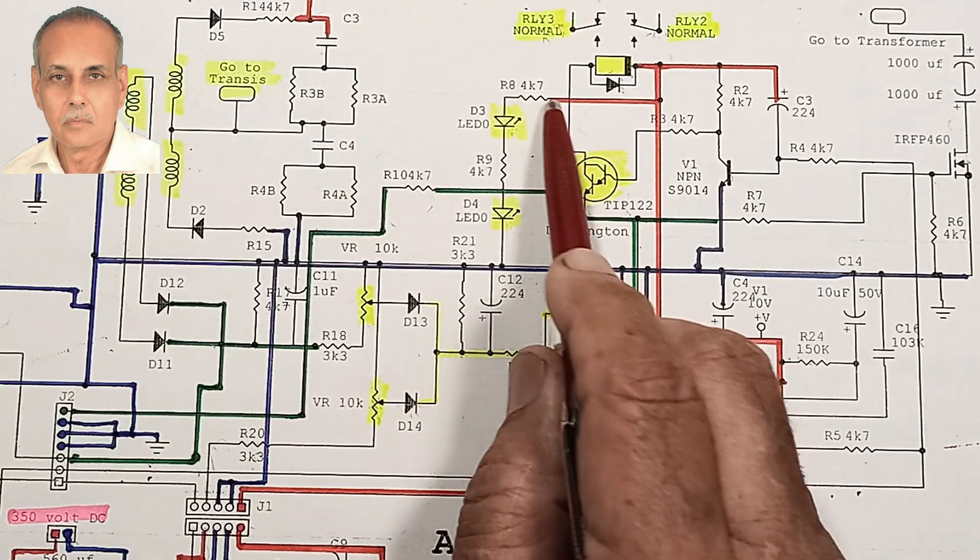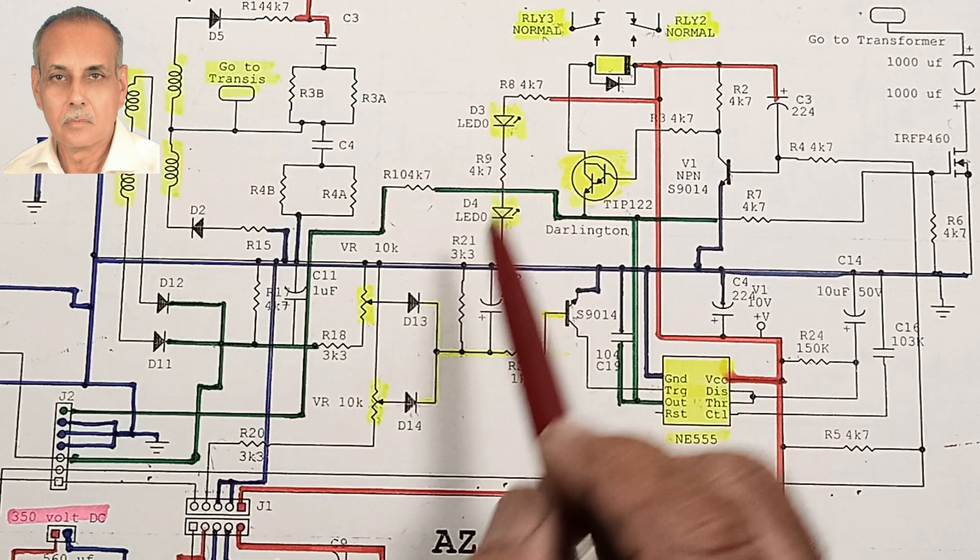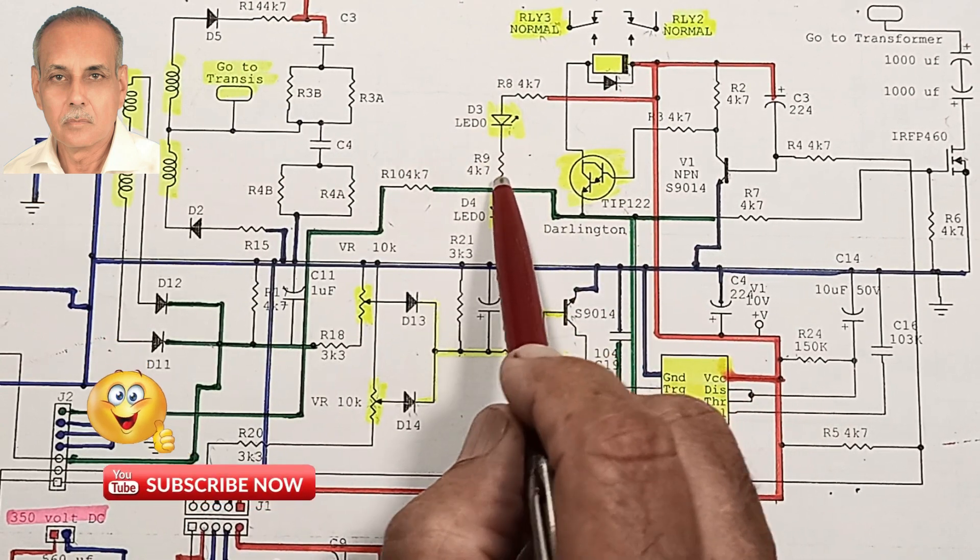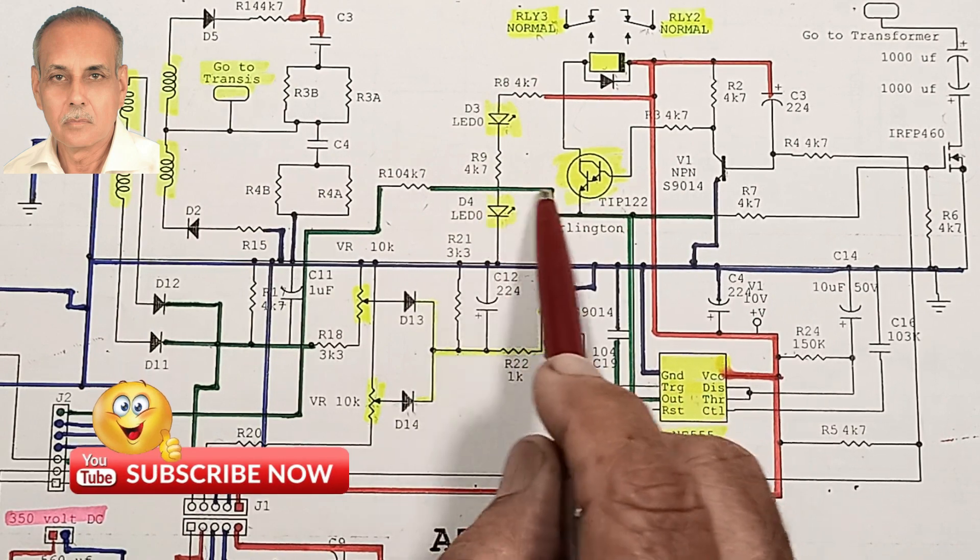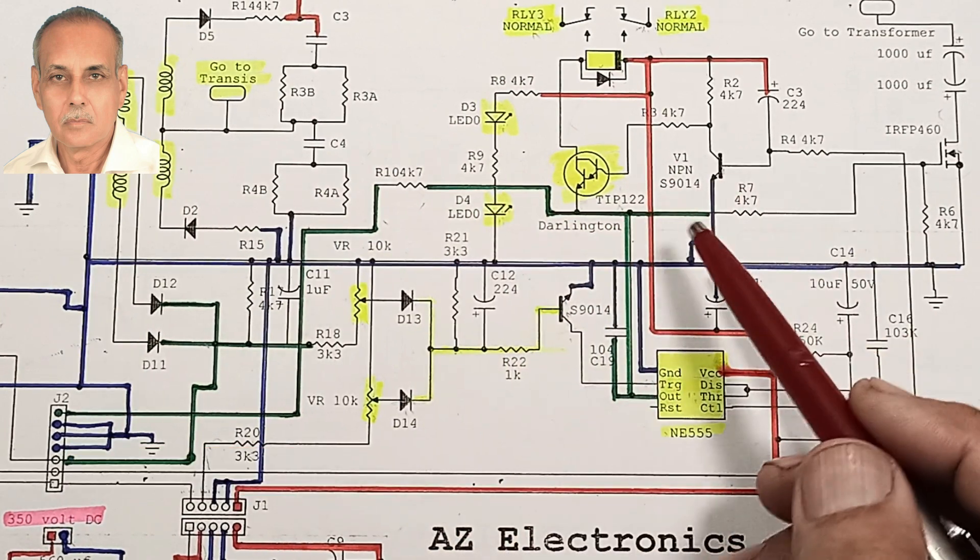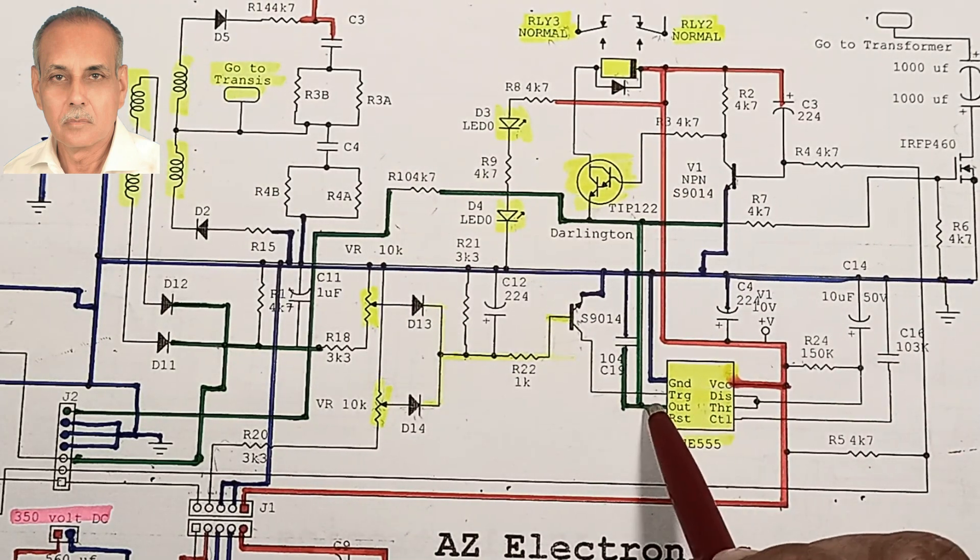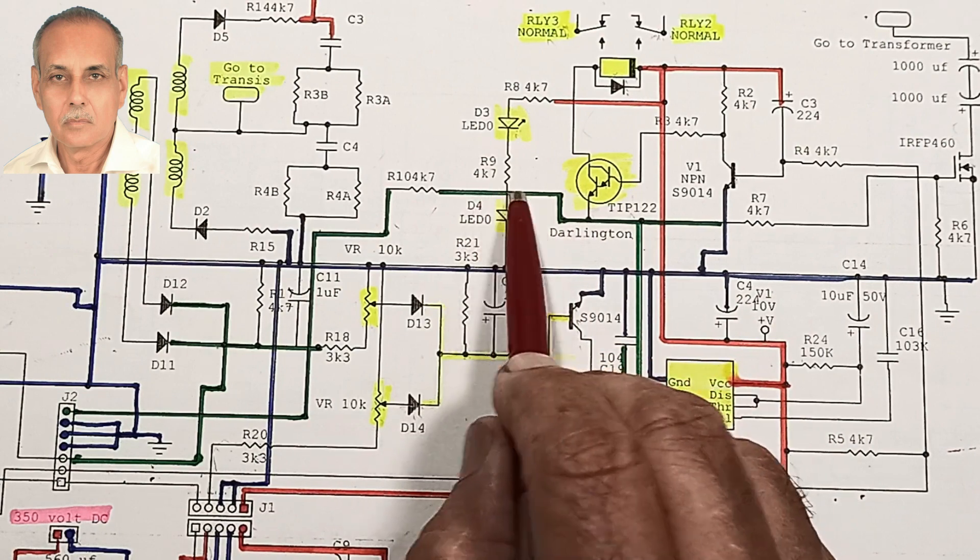Along with the 555 IC, this 12 volts is also entered inside the relay. From here along with the relay, a resistance is given to the LED through a resistance of 4.7K, and the other side of the LED is connected from the 555 IC output pin. From here we have given it a ground, that means a minus signal from 555 IC.